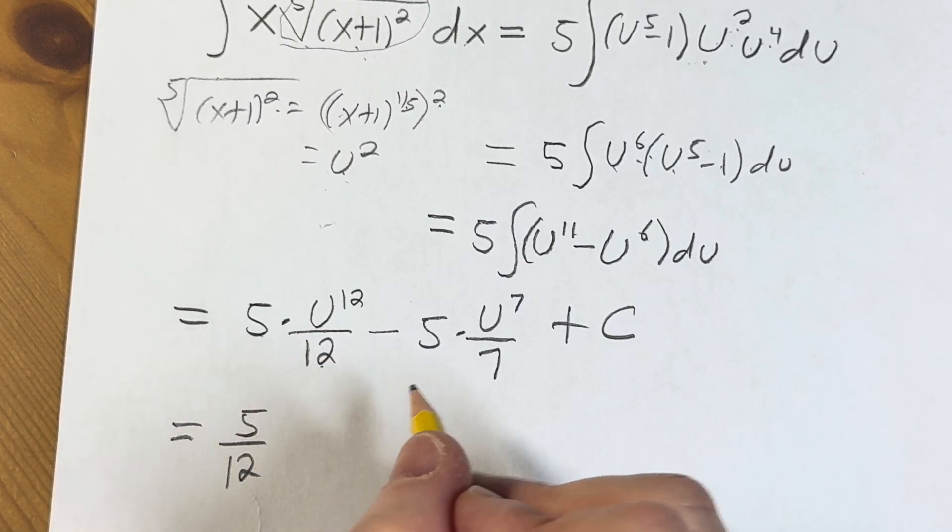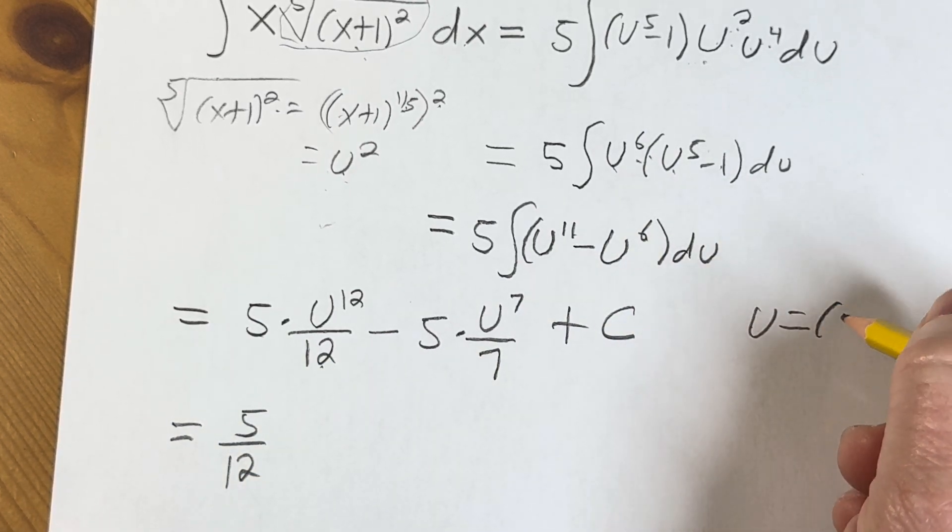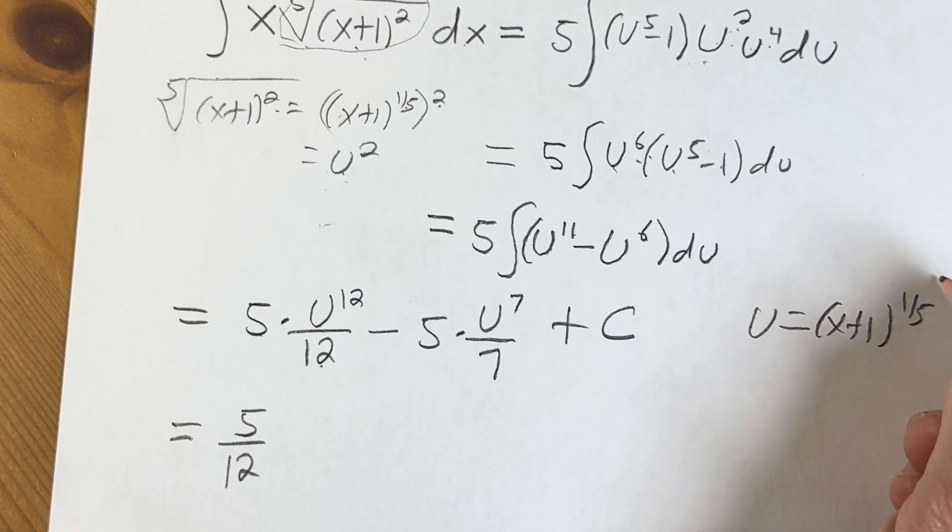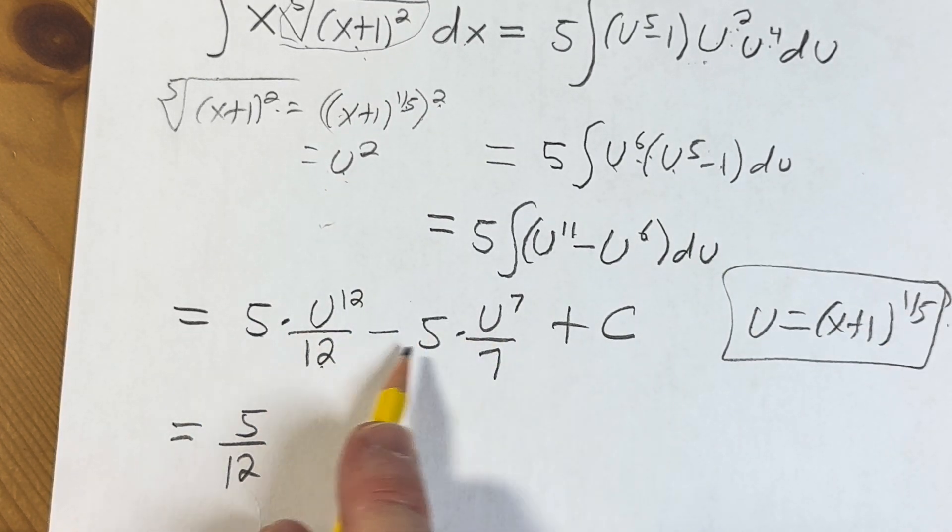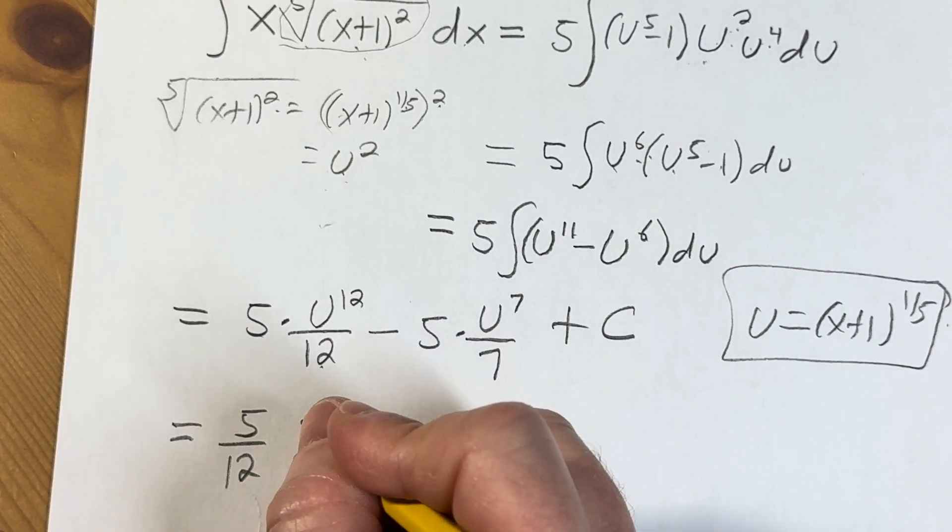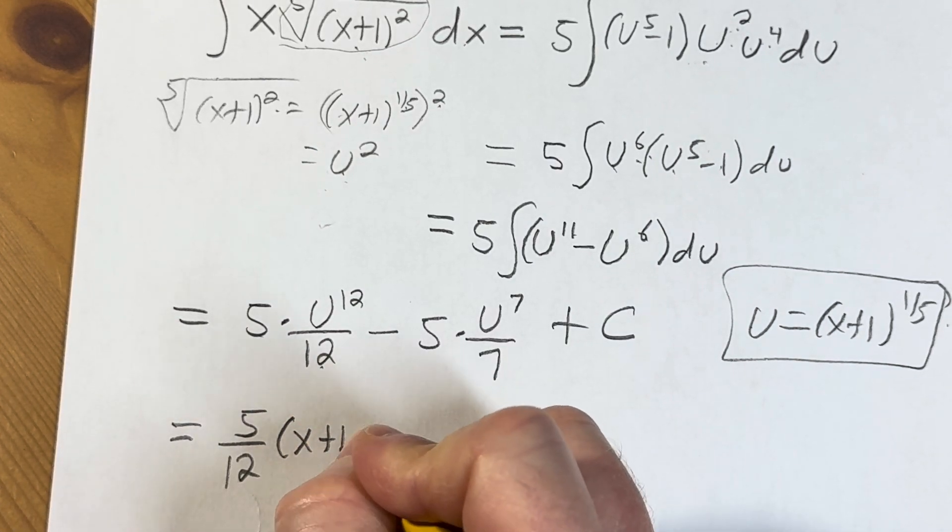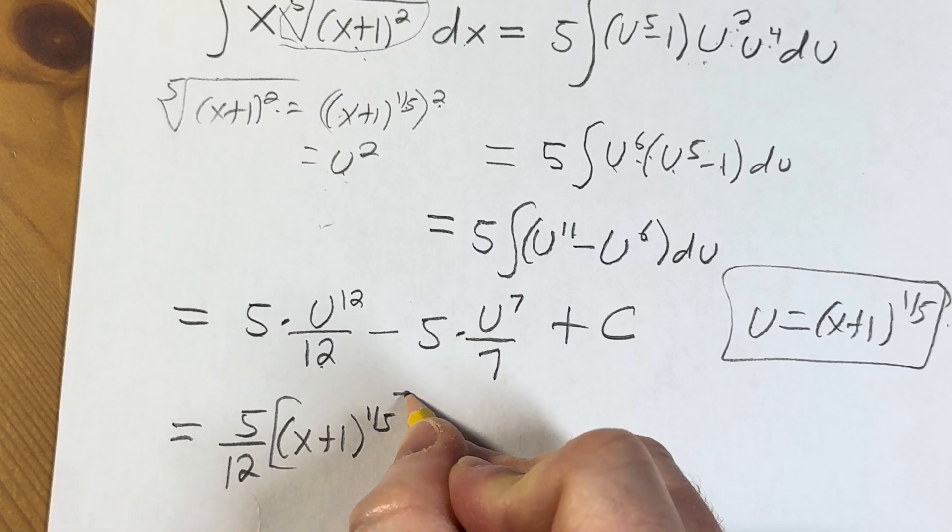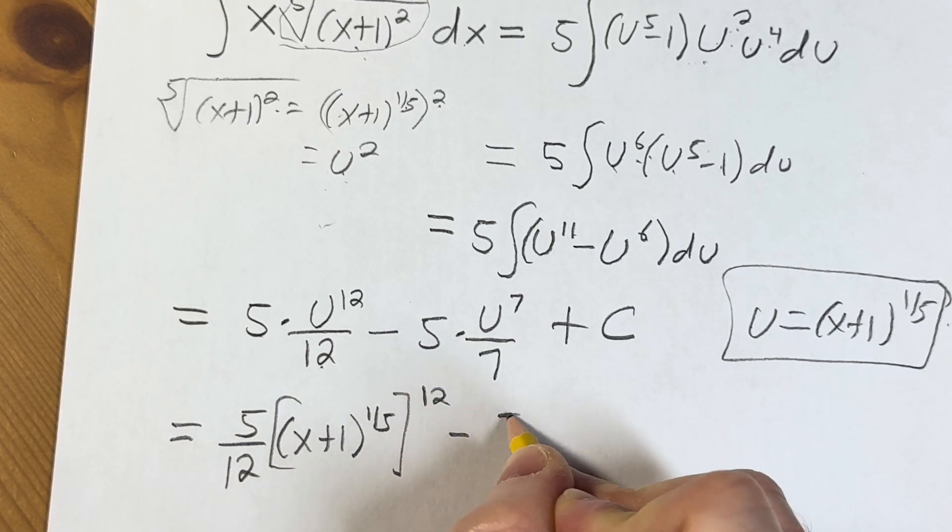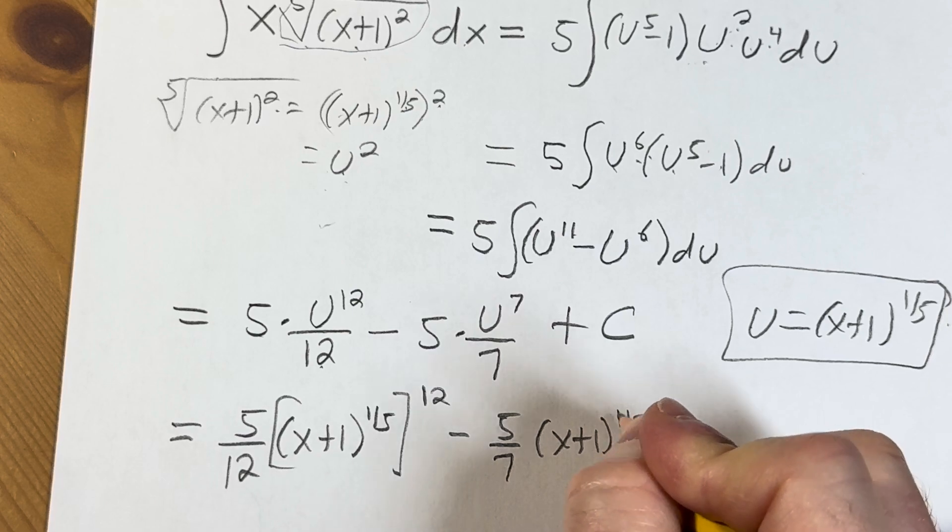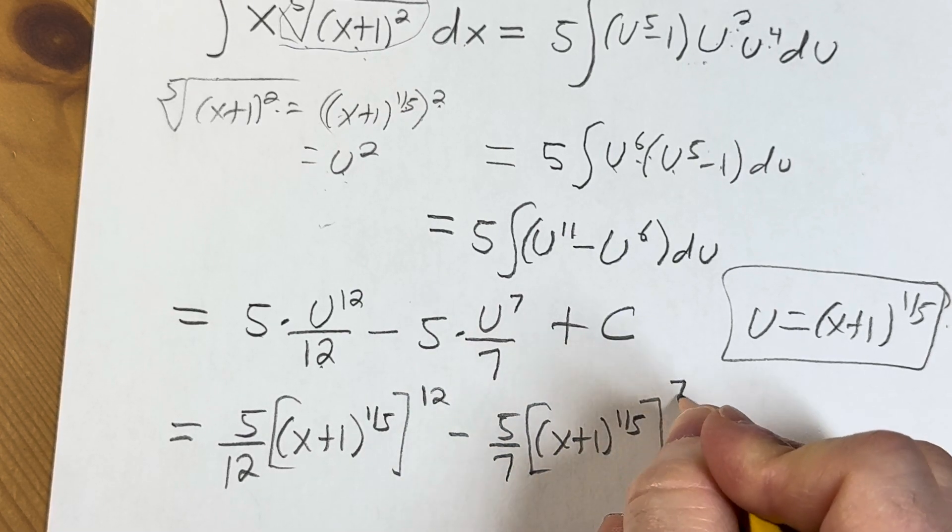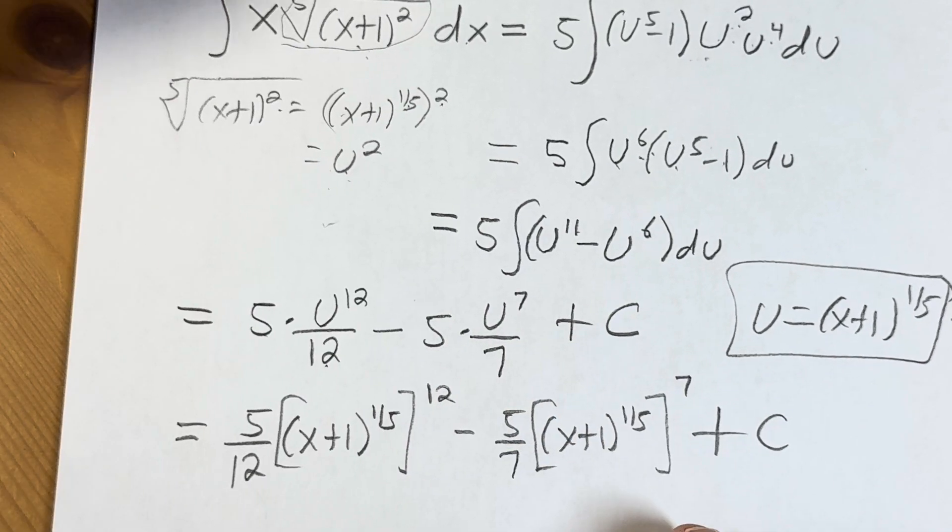What was u? Recall that u was x plus 1 to the 1 5th. That was our u. So we're going to now replace every instance of u with that. So this is x plus 1 to the 1 5th to the 12 power minus 5 7ths. x plus 1 to the 1 5th to the 7th power plus c.